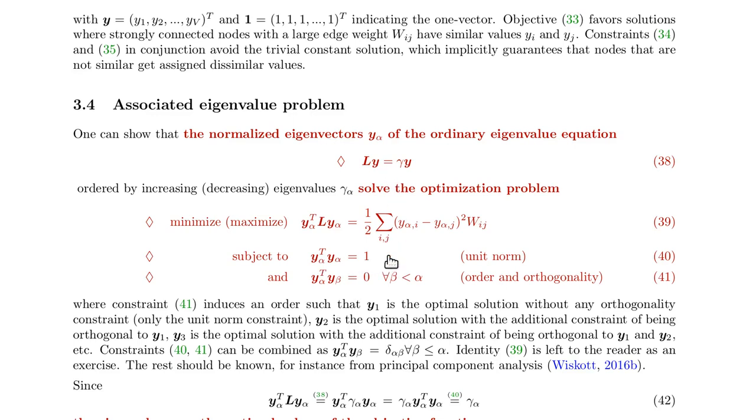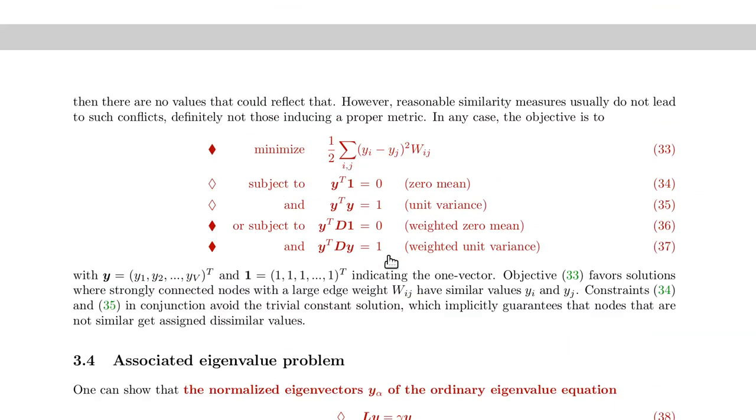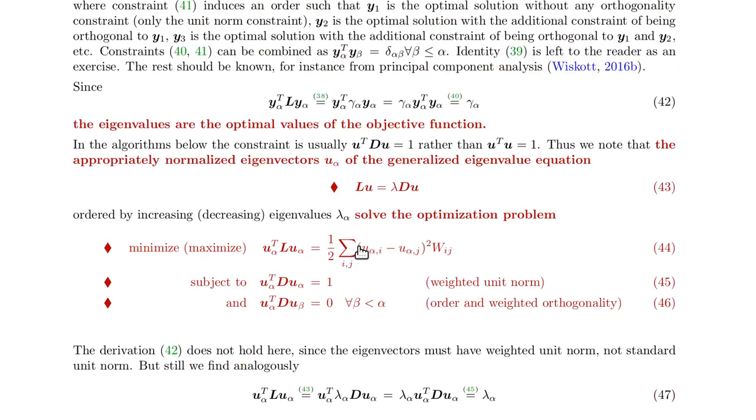Now, there's a similar eigenvalue equation for this version with this normalized constraints or weighted constraints. And this is a generalized eigenvalue problem that's shown here. So, rather than L u equals lambda u, we now have L u equals lambda D u. And that solves this optimization problem under these constraints. So, we have a weighted unit norm and we have a weighted orthogonality. And, like above, we can show that the value of that function is, again, the eigenvalue.